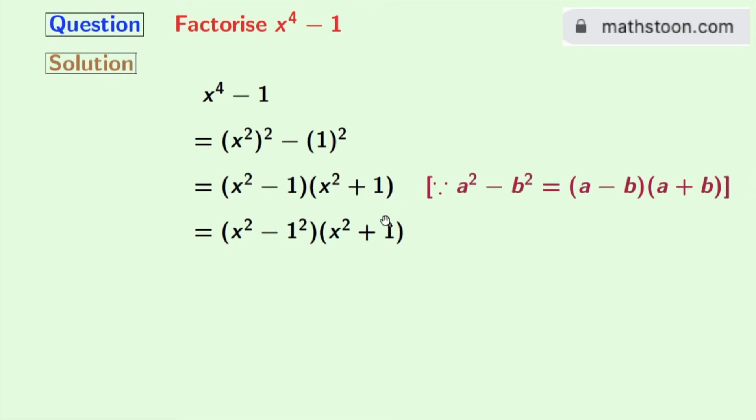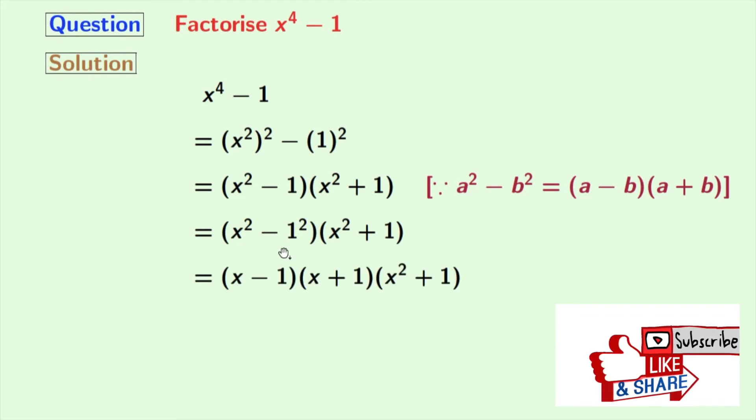Now look that in the first part we can again apply the formula of a square minus b square, where a is x and b is 1. So applying that formula we get x minus 1 times x plus 1.